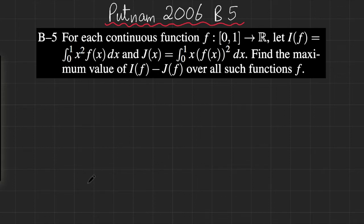Hi, today we are going to be going over B5 of Putnam 2006. This problem is about maximizing an integral. It states, for each continuous function from [0,1] to R, let I(f) be the integral from 0 to 1 of x² f(x) and J(f) be the integral from 0 to 1 of x(f(x))². Find the maximum value of I(f) - J(f) over all such functions f.